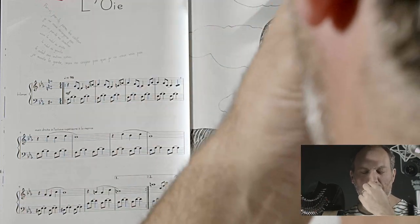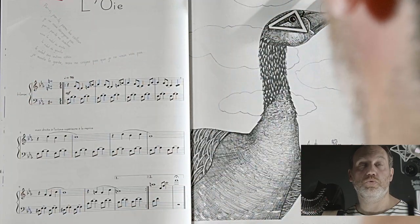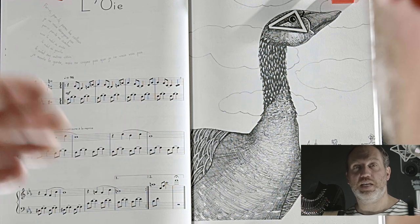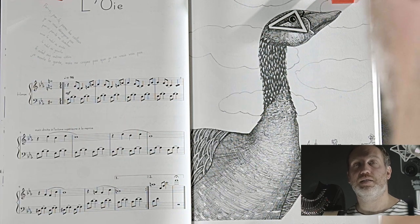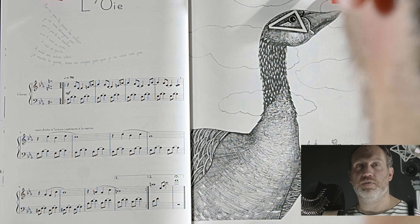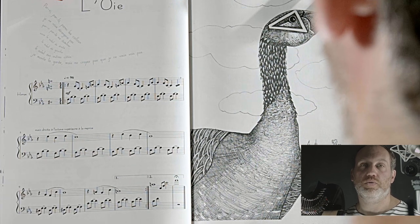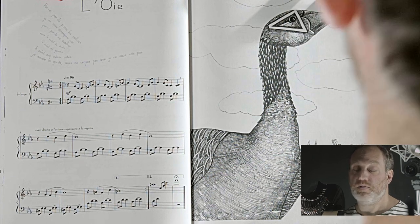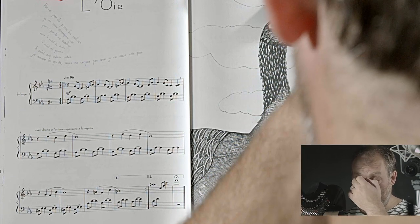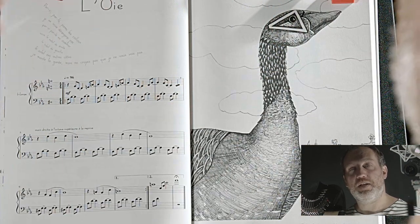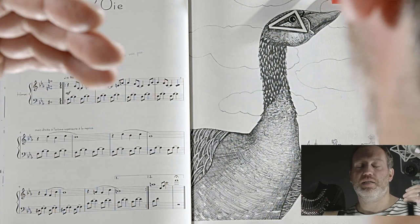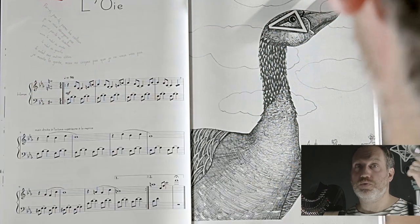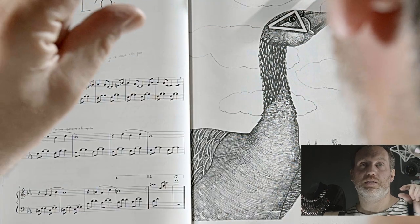Il y a l'unisson — deux noms de notes similaires. Seconde, un écart de deux, tierce, quarte, quinte, sixte, septième, octave, et ensuite neuvième, dixième, onzième, treizième, etc., jusqu'à l'infini. Ce qu'on appelle les neuvièmes, dixièmes, etc., c'est des intervalles qu'on va appeler redoublés — c'est-à-dire que c'est Do-Ré, puis Do-Ré une octave au-dessus, on appelle ça une neuvième.